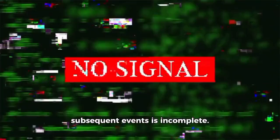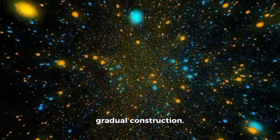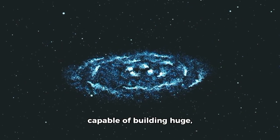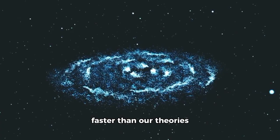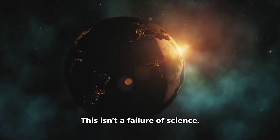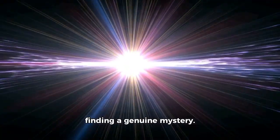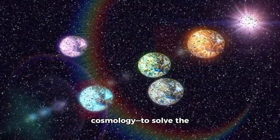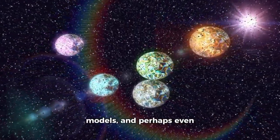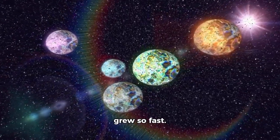These so-called impossible galaxies aren't a sign that the Big Bang is wrong. They are a flashing signal that our understanding of the subsequent events is incomplete. The early universe did not undergo a slow, gradual construction. It was a cosmic factory capable of building huge, complex galaxies at a rate faster than our theories can explain. This isn't a failure of science. This is science. It's the thrill of finding a genuine mystery. These discoveries have kicked off a new race in cosmology to solve the problem, improve our models, and perhaps even uncover new physics that explains how our universe grew so fast.